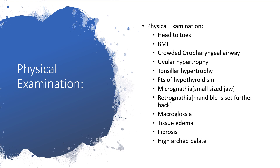Physical examination will involve a head-to-toe examination and calculating the body mass index. Check the oropharynx for a crowded oropharyngeal airway, uvular hypertrophy, or tonsillar hypertrophy. Check for features of hypothyroidism — any bradycardia, any increase in weight, cold intolerance, loss of hair, macroglossia, and of course, micrognathia — that is, a small-sized jaw — or retrognathia, where the mandible is set further backward. Macroglossia can be seen with hypothyroidism, or due to tissue edema, fibrosis, and high-arched palate.